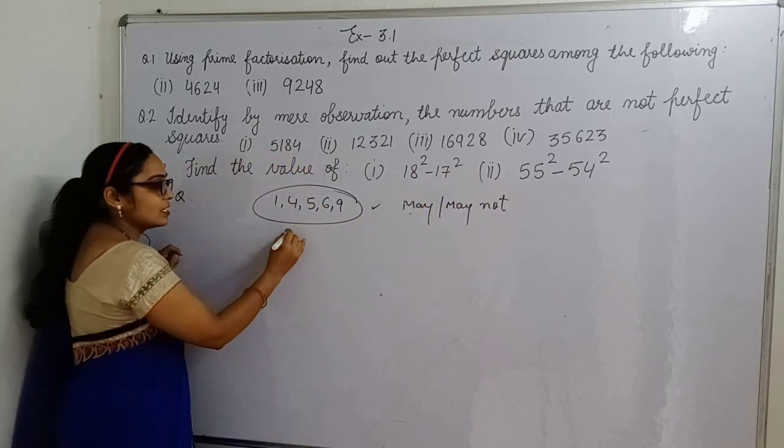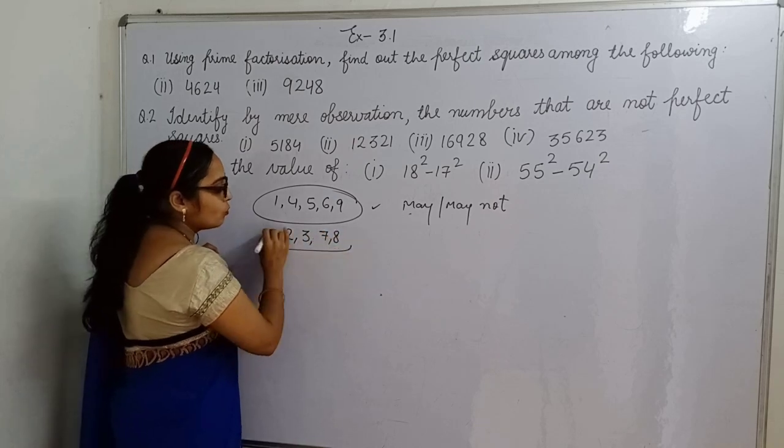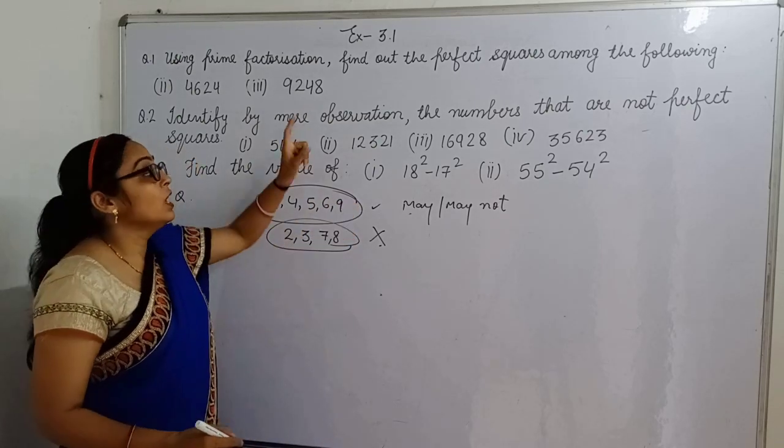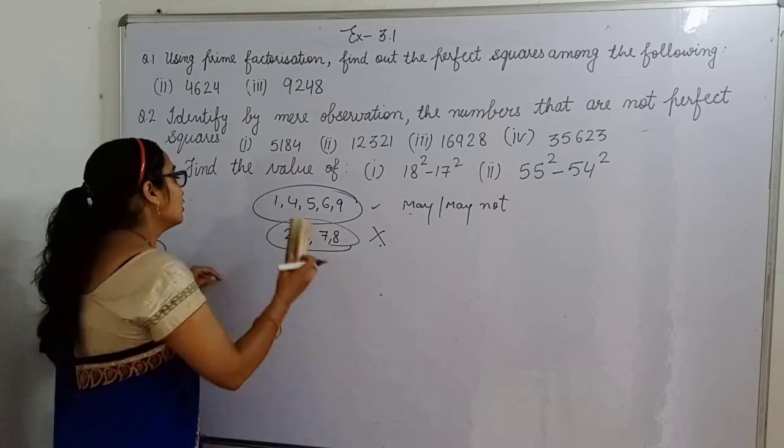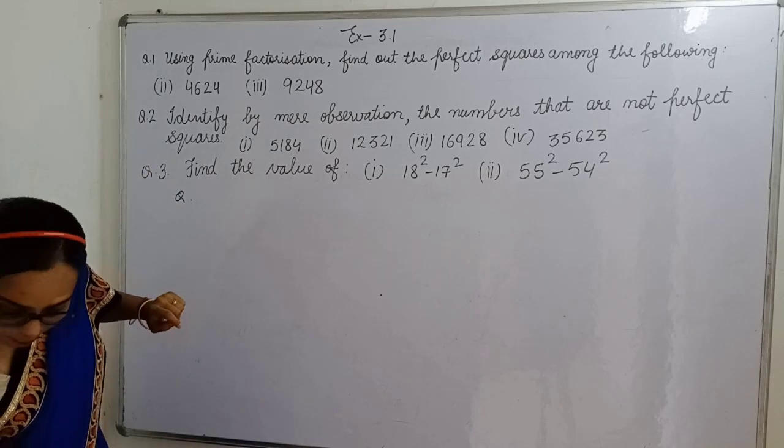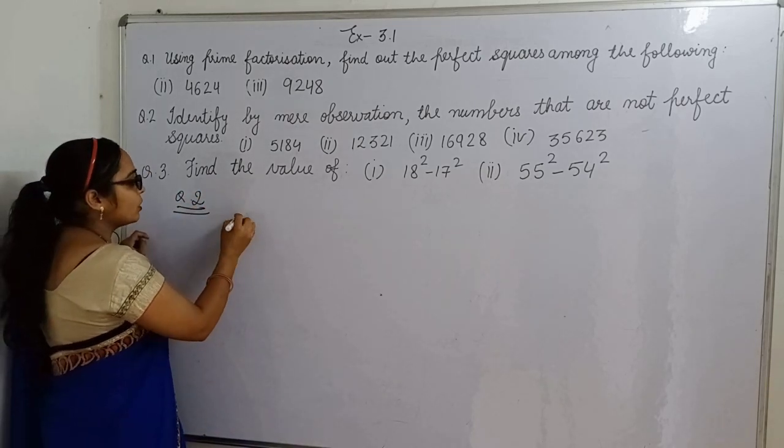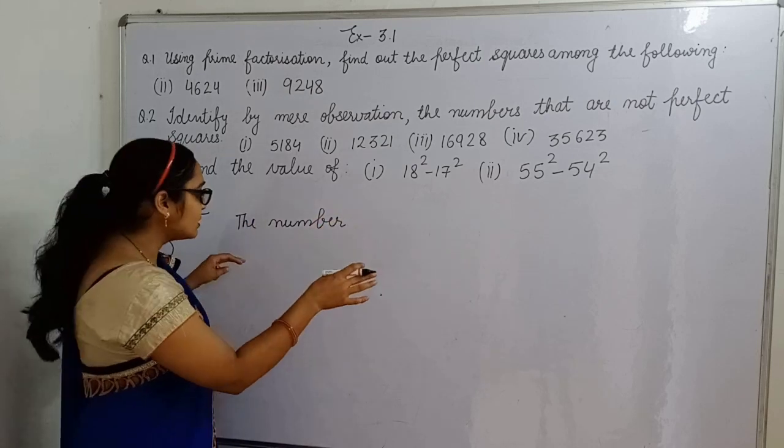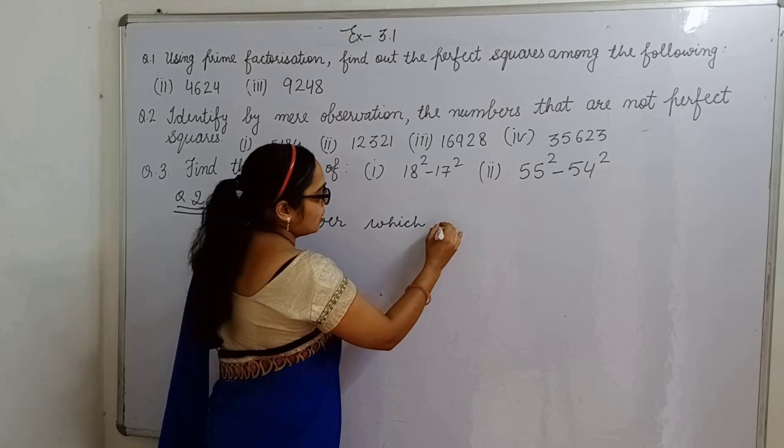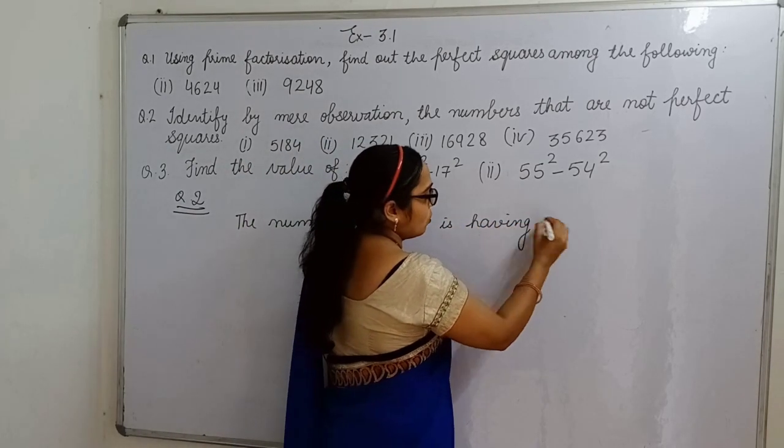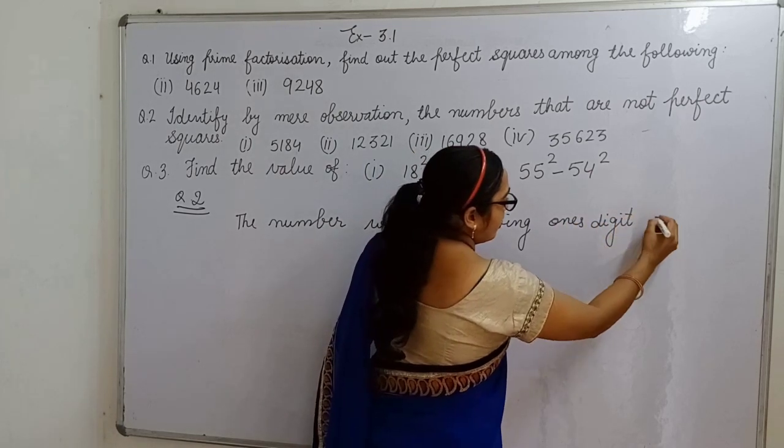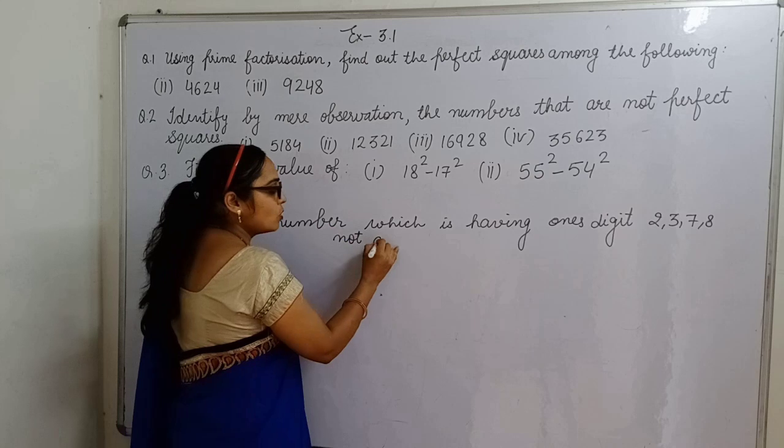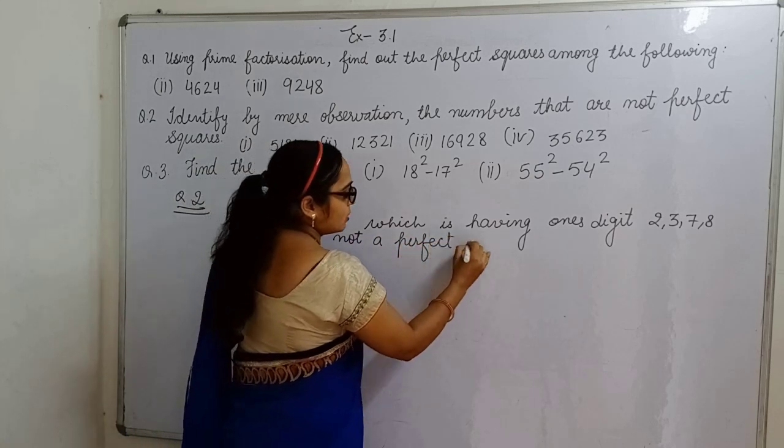Agar kisi ka unit digit 2, 3, 7, 8 ye hai, to wo kabhi bhi ho hi nahi sakti hai. Yahaan humein surety hai. Yahaan humein surety nahi hai. Hum kya nikalna hai - not perfect square. To aap is property ko likh do. Question number 2 mein, property you can write down. Jab aap solution karoge, then aap ye property likhoge. The numbers which is having unit digit 2, 3, 7, 8, that means not a - that number is not a perfect square. This property you can write down.